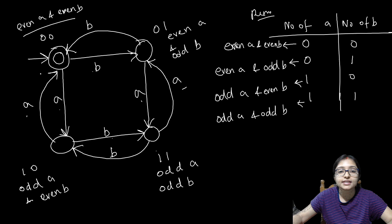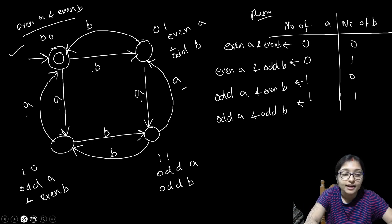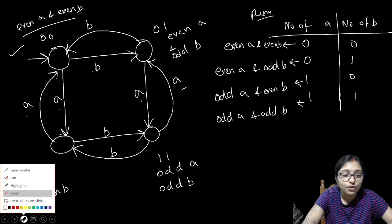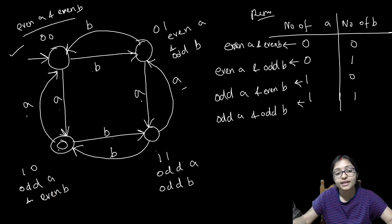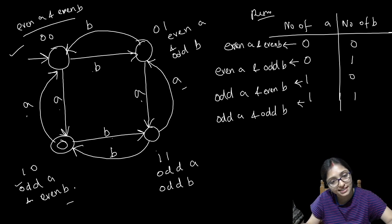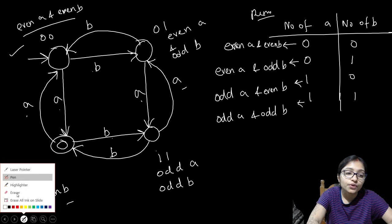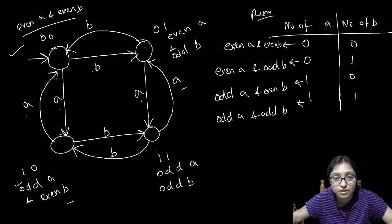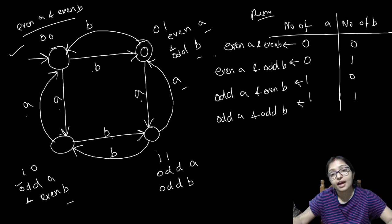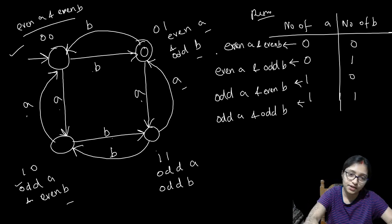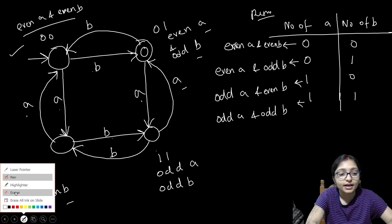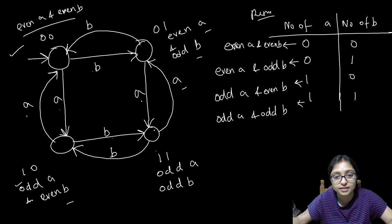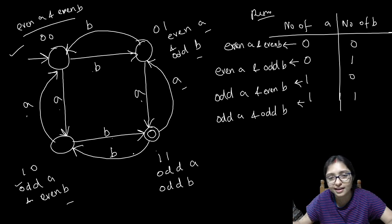If I make this one the final state, then it is even A and even B. If I change the final state to the 0,1 state, then it is even A and odd B. If I change the final state to the 1,0 state, then it is odd A and even B. And if the last state (1,1) is the final state, then it will be odd A and odd B.